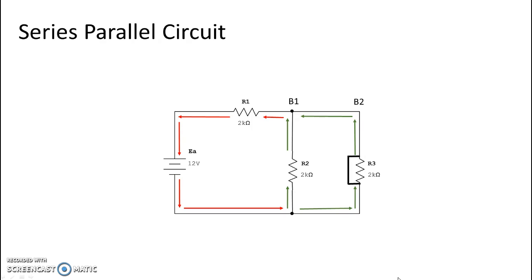You will also see an arrow that indicates that new path, and you will see the arrows for current disappearing in branch one. The reason for this is that current takes the path of least resistance, and a wire around R3 will provide a much less resistive path than 2,000 ohms in branch one. So we see current only going through branch two.